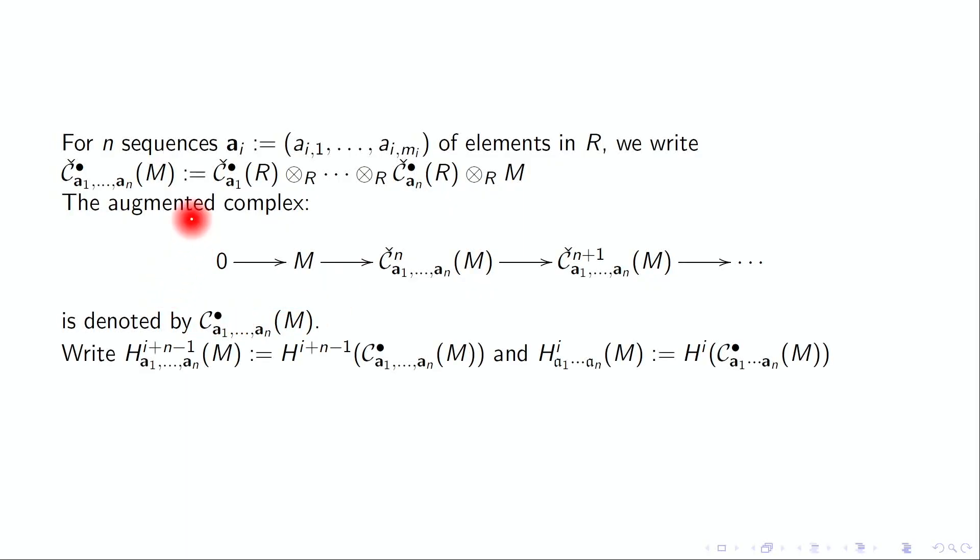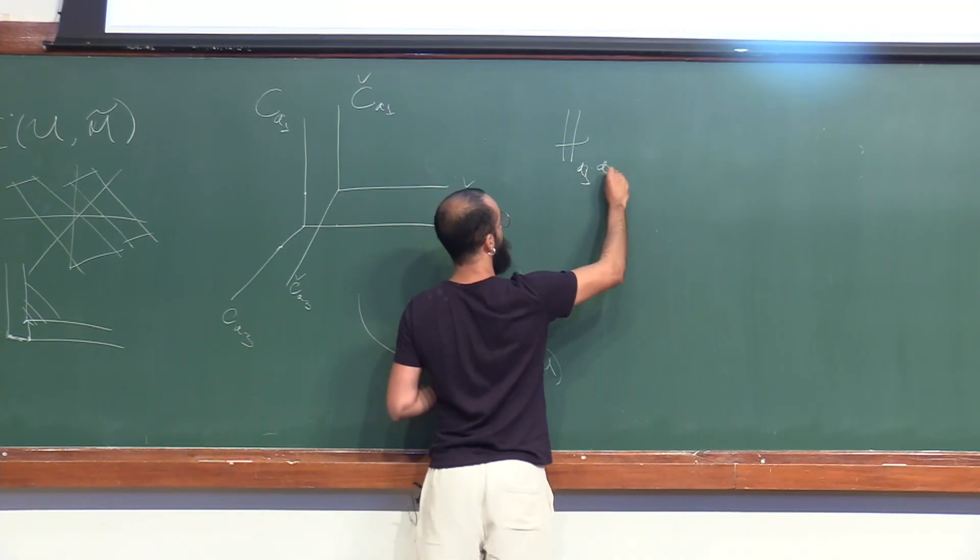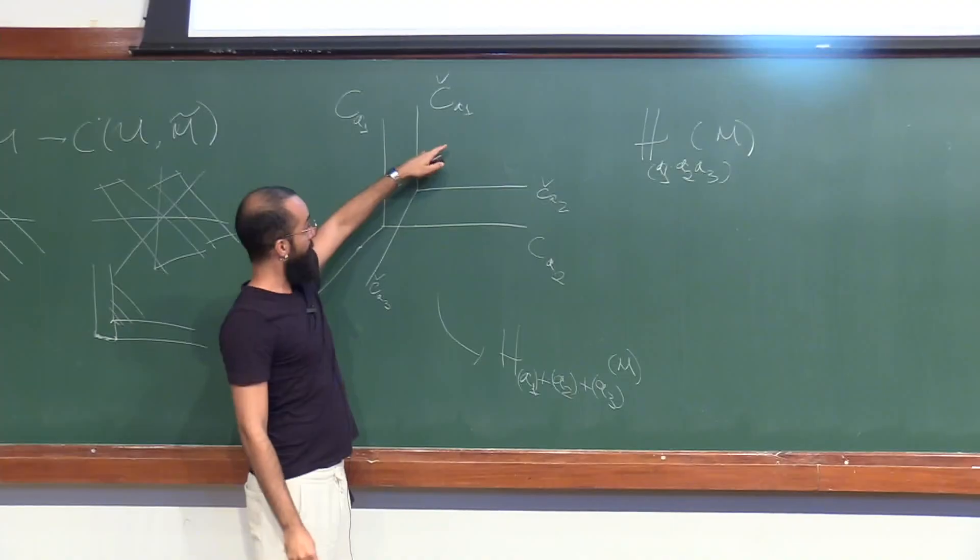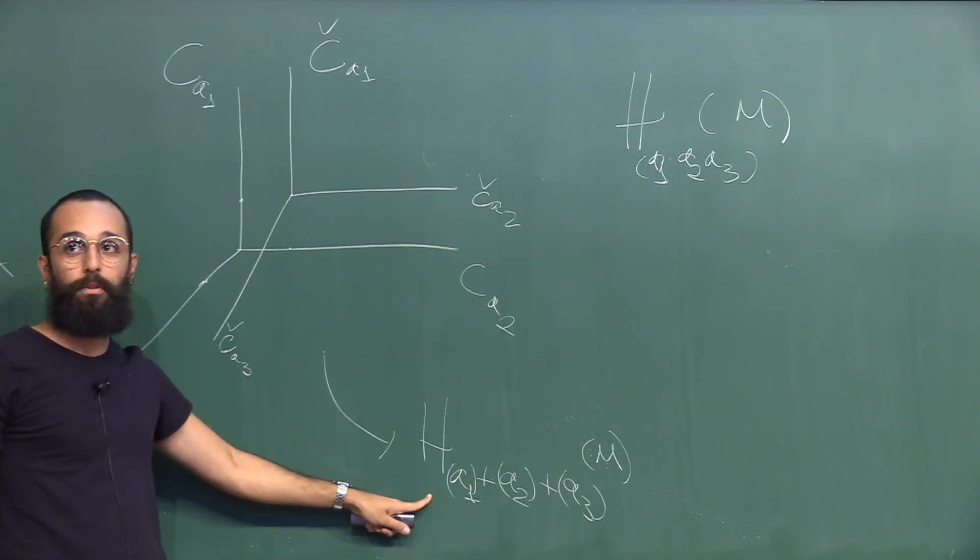For the cohomology of this new complex we denote this H^i_{(a_1,...,a_n)}. This shift appears because this complex is in the interior of the entire Čech complex, so we have this shift. The second main theorem says that actually the cohomology of this product is cohomology of M supported in the product of the ideals. In other words, we have cohomology in the product. This cohomology can be computed from a sub-multicomplex of a multicomplex that gives cohomology supported in the sum of the ideals. It's very interesting, right?